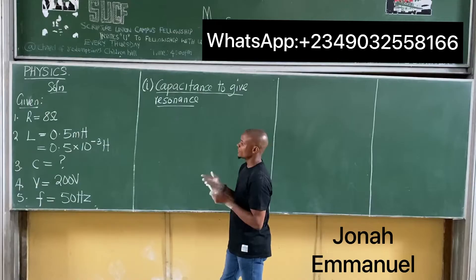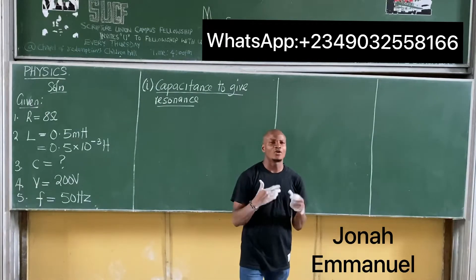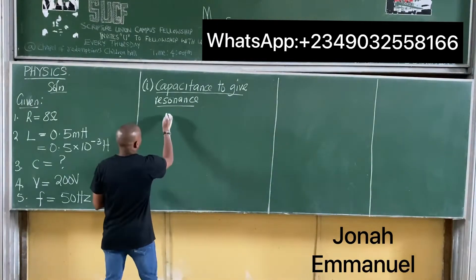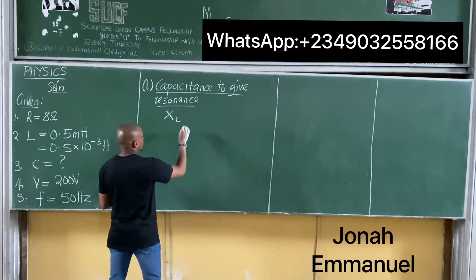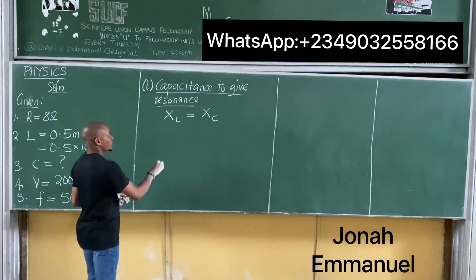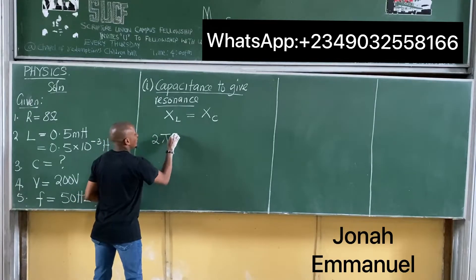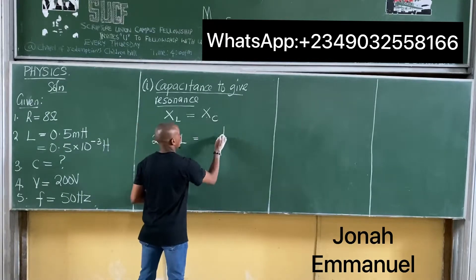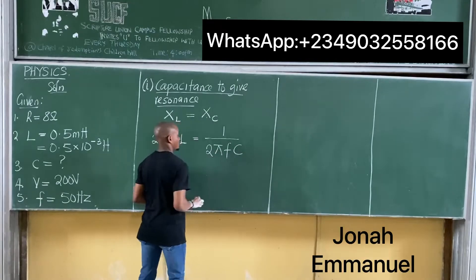For this case, to get the value of C, record the condition for resonance to occur. We said for resonance, the reactance of the inductor must be equal to the reactance of the capacitor. That is, XL equal to 2 pi F L, and XC equal to 1 over 2 pi F C. So set them equal: 2 pi F L equals 1 over 2 pi F C.